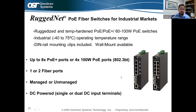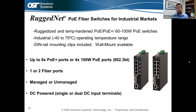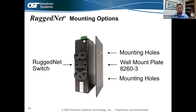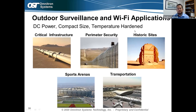RuggedNet can come with one or two fiber ports, managed or unmanaged, and DC power with single or dual DC input. There are also alarm contacts on top of the RuggedNet device that you can link up to send alarms — for example, if someone tampers with the enclosure or opens the door, an alarm is sent to the network manager. Mounting options include the included DIN rail clip or wall mounting plate part number 8260-3, or a rack mount shelf. RuggedNet is great for outdoor surveillance and Wi-Fi applications, long linear fiber runs like oil pipelines, perimeter security, historic sites, and sporting arenas.